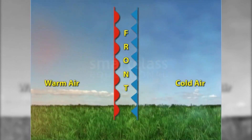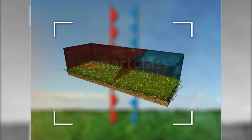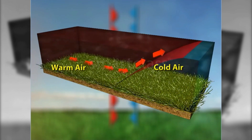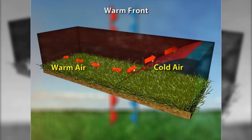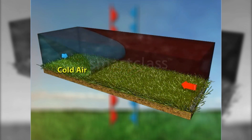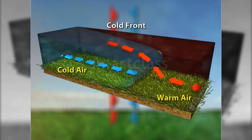Due to differences in characteristics, the warm and cold air masses do not mix with each other. Warm air moves towards the cold air and, being lighter, it rises above the cold air — this is termed a warm front. Sometimes cold air moves towards the warm air and pushes it to rise; this is called a cold front.